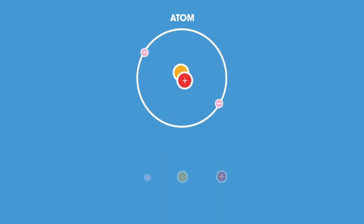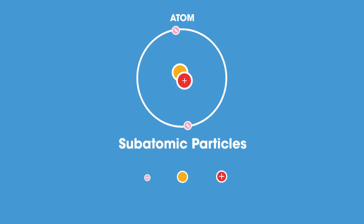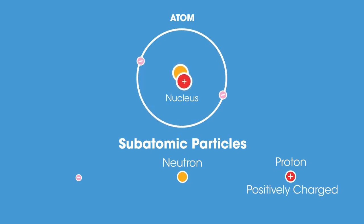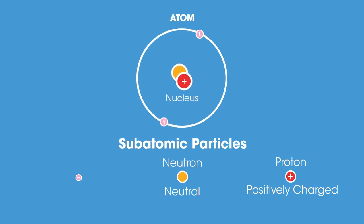Atoms may be tiny particles themselves, but they are made of even smaller particles called subatomic particles. Atoms consist of a central nucleus that contains protons and neutrons. Protons are positively charged and neutrons have no charge, which makes the nucleus overall positively charged.